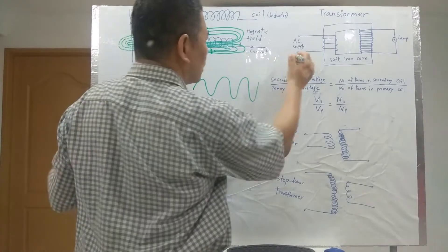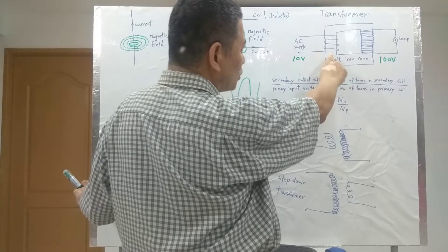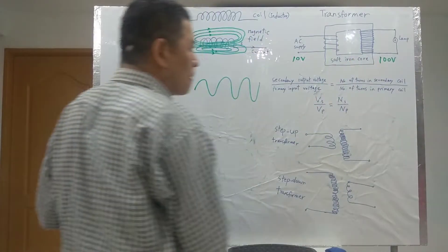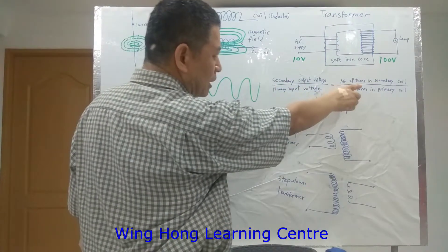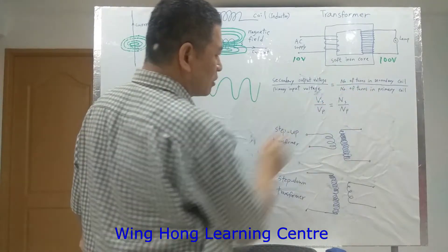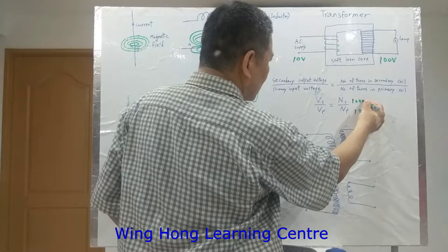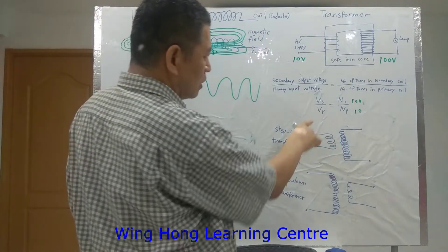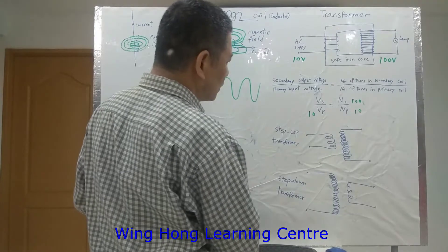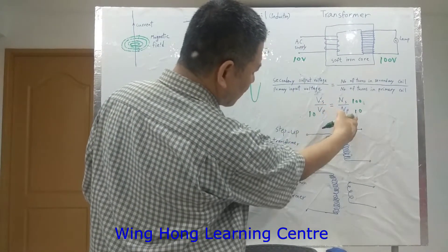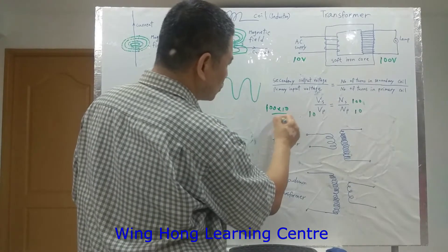The function of the transformer is to change the voltage. Let's say the primary input is a given voltage and the secondary output can be regulated to 100V, depending on the number of turns on both primary input and secondary output. The formula is: secondary output voltage over primary input voltage equals the number of turns in the secondary coil over the number of turns in the primary coil. Let's say the primary has 10 turns and the secondary has 100 turns. If the primary input voltage is 10V, then the secondary output is 100 times 10 over 10, which equals 100V.